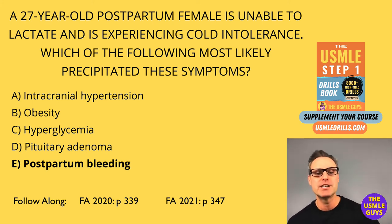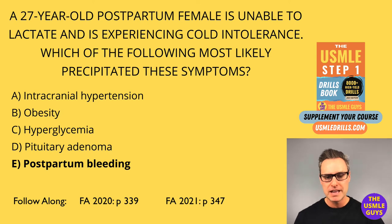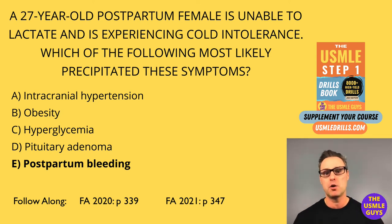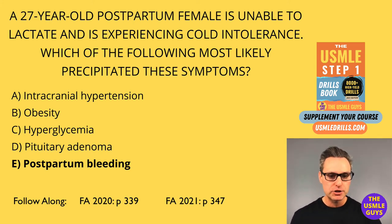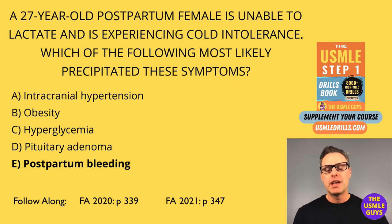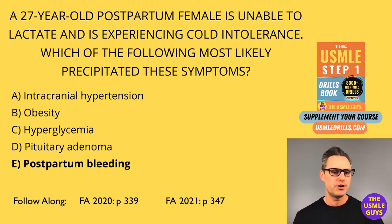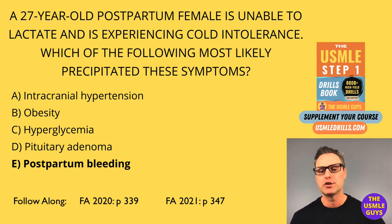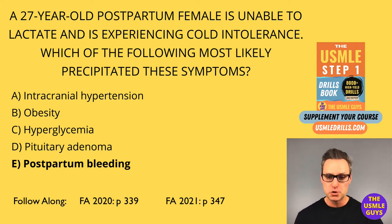There are a couple other conditions we need to know with respect to hypopituitarism: pituitary apoplexy and empty sella syndrome — commonly tested and super high yield. Pituitary apoplexy is an acute hemorrhage of the pituitary, typically when there's already an existing lesion, like an adenoma. It characteristically presents with an acute onset of severe headache, visual problems like bitemporal hemianopia or diplopia caused by cranial nerve three palsy.